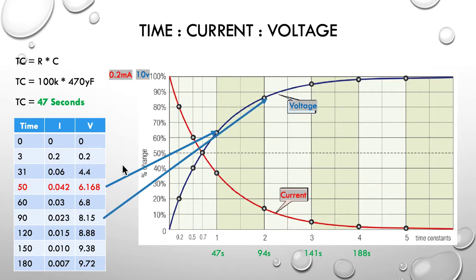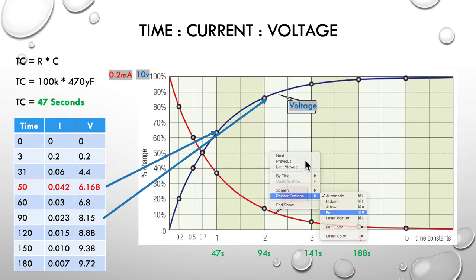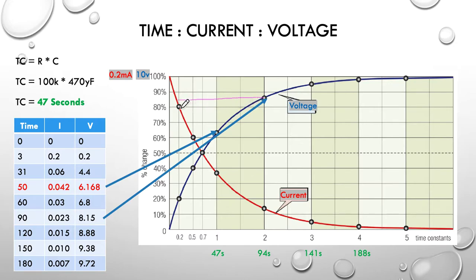Second time constant is at 94 seconds and our nearest is 90, which is pretty damn close. So we project back, and we're going to be somewhere around 85%, or maybe 8.5 volts, and we're not far off that, at about 8.2.